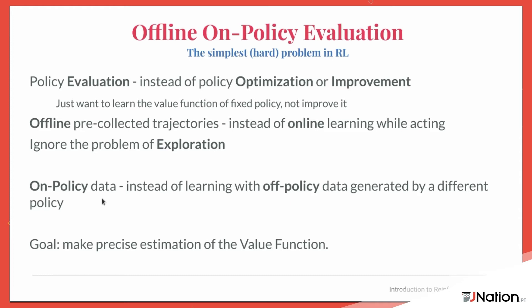Another simplification is restricting to on-policy learning: you are learning the value function for a policy that is the same as the one that collected the data. A harder problem, called off-policy learning, means learning the value function of policy pi from data collected by a different policy. This is much harder — especially if the two policies differ too much and visit almost non-overlapping areas of the state space, making it nearly impossible. We restrict ourselves to on-policy data, and our goal is to make a precise estimation of the value function — with low mean squared error of predictions.